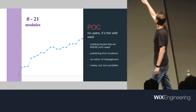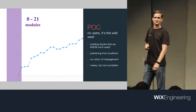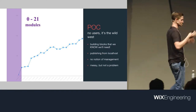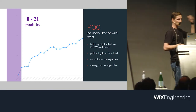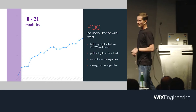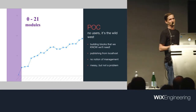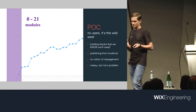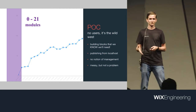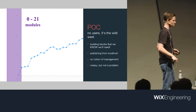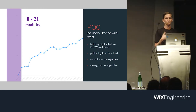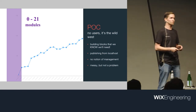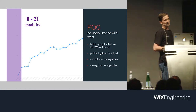When we had only 0 to 21 modules, it was really fun — nothing to manage. You just write code with your cowboy hat on, publish from localhost. These modules weren't really connected. They were basically POCs or experiments to see if we could actually build something that could work in Wix production, since Node was a second backend platform alongside JVM.